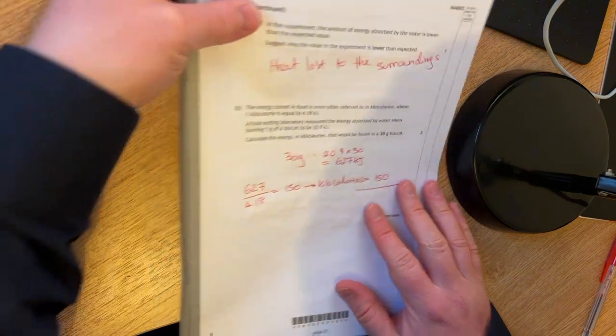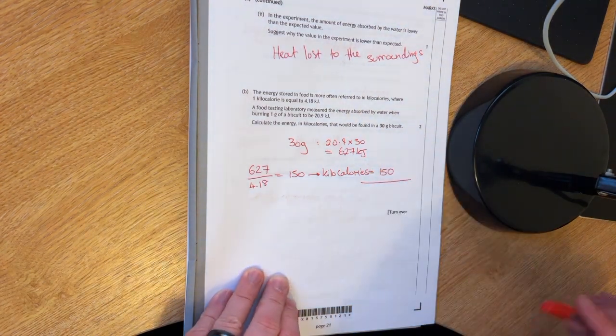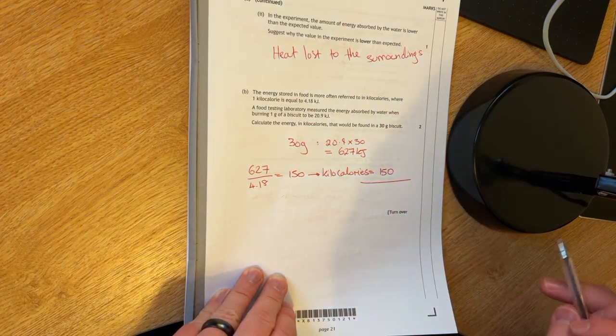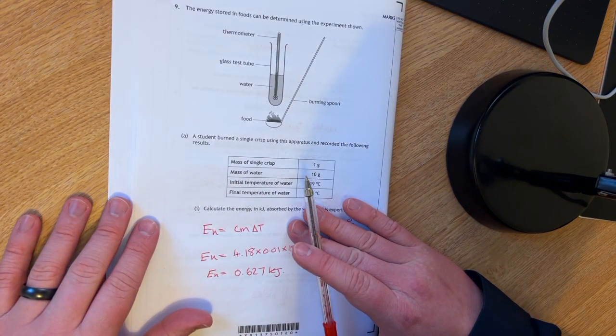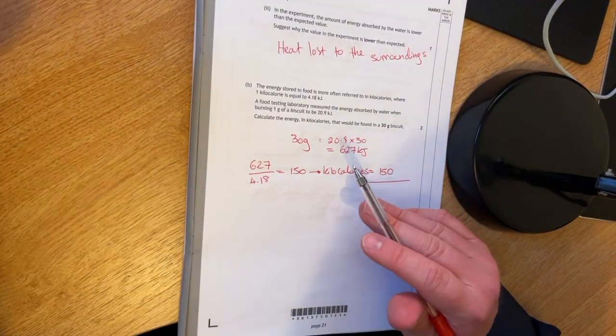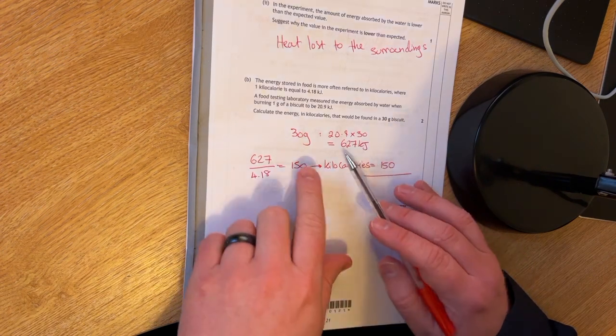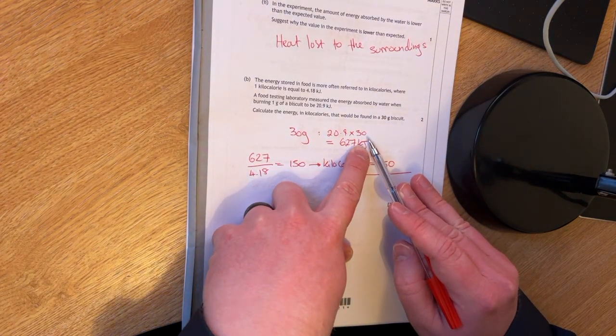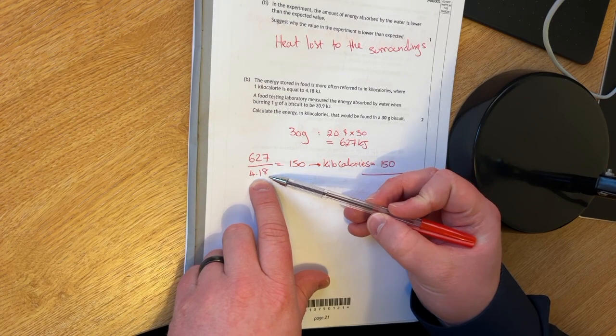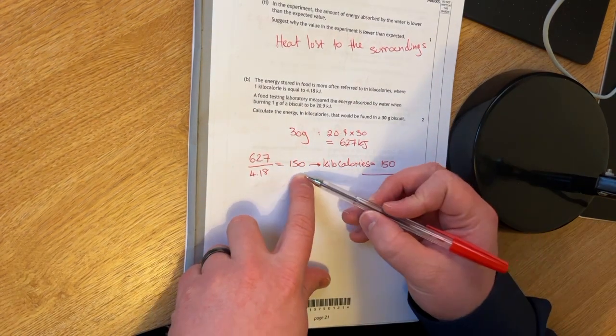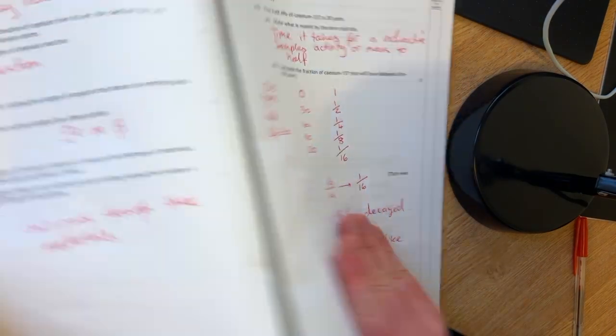In the experiment, the amount of energy absorbed by the water is lower than the expected value. You have to suggest why the value in the experiment is lower. Heat lost to the surroundings is going to be my answer. If you calculate the energy in kilocalories, it would be found in a 30 gram biscuit. So 30 grams, 20.9 times 30, that gives you 627 kilojoules. 627 divided by 4.18 is 150 kilocalories.